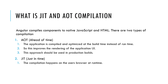So what is JIT and AOT compilation? Angular compiles components to native JavaScript and HTML. There are two types: AOT (Ahead of Time) and JIT (Just in Time). With AOT, the application is compiled and optimized at build time instead of runtime, which improves rendering of the application UI — this approach should be used in production builds. With JIT, compilation happens on the user's browser at runtime.